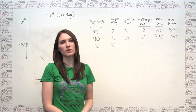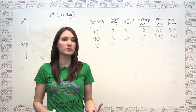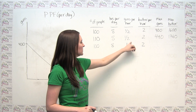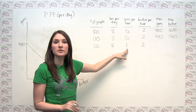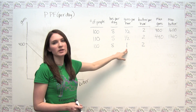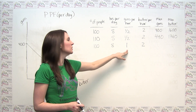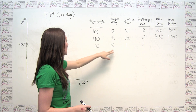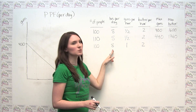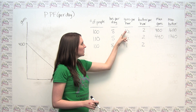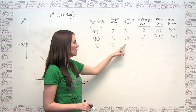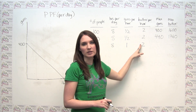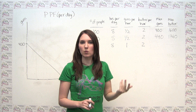As a second example, let's consider an increase in gun technology. An increase in gun technology is represented by the fact that individuals in our society can make more guns per hour than they could before. So we've gone back to our original status quo: 100 people, each person working 8 hours per day. But now, rather than making one half of a gun per hour, they can make one gun per hour. Notice that their productivity in butter has not changed — they can still make 2 pounds of butter per hour.